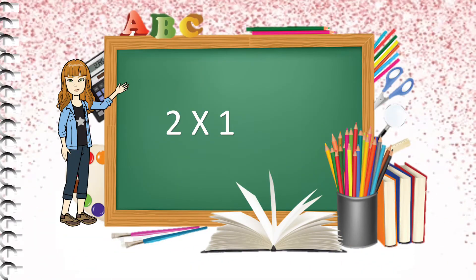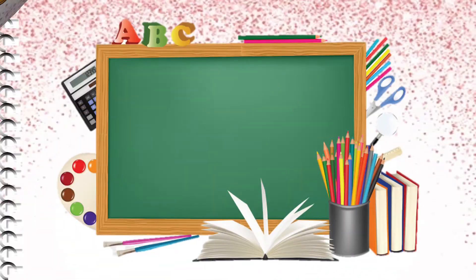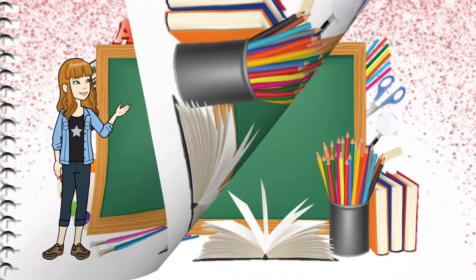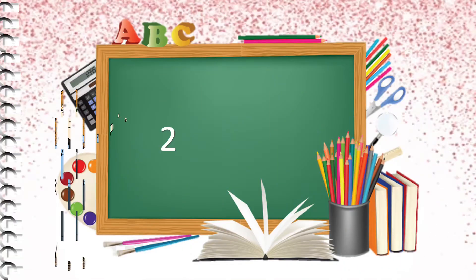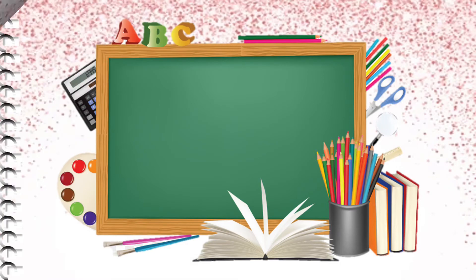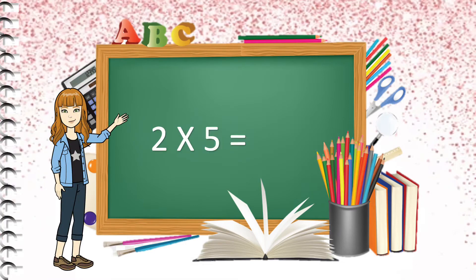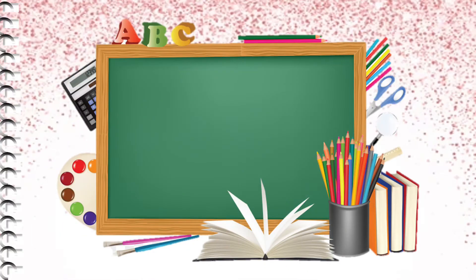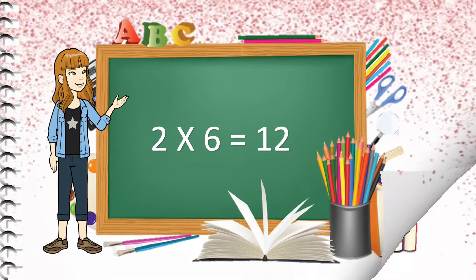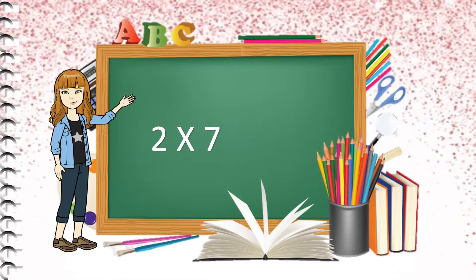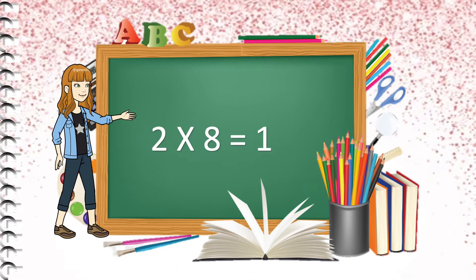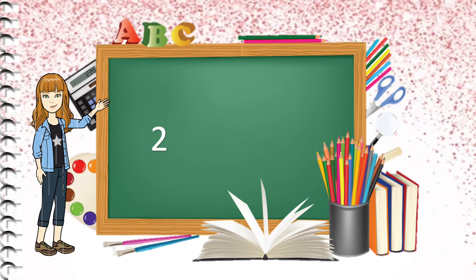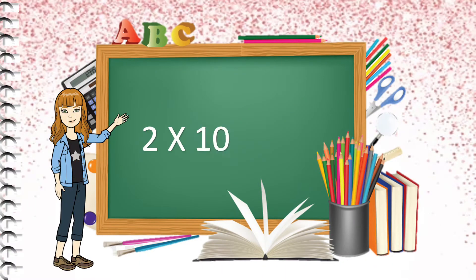2 one's are 2. 2 two's are 4. 2 three's are 6. 2 four's are 8. 2 five's are 10. 2 six's are 12. 2 seven's are 14. 2 eight's are 16. 2 nine's are 18. 2 ten's are 20.